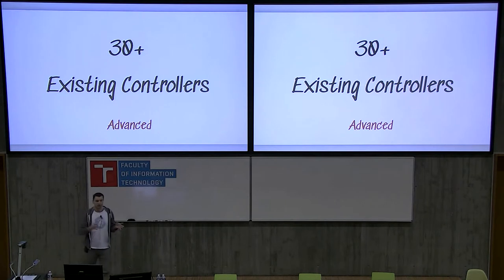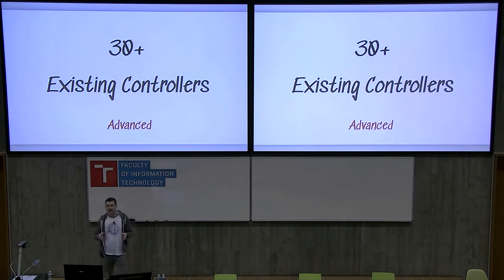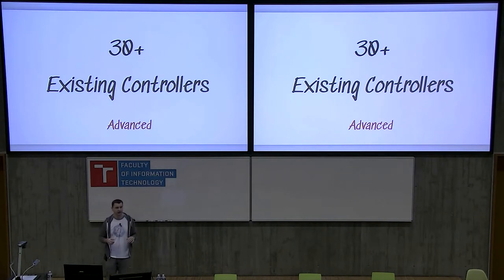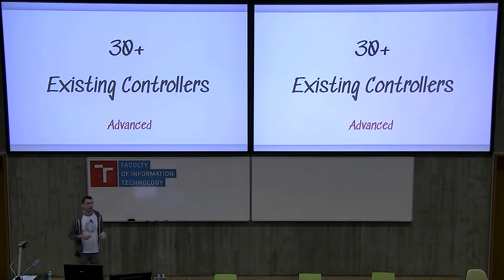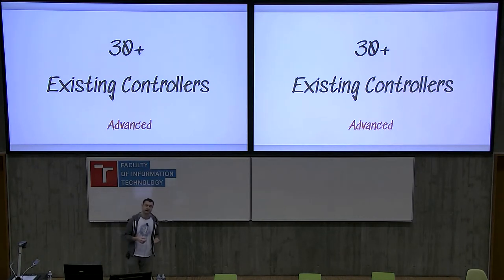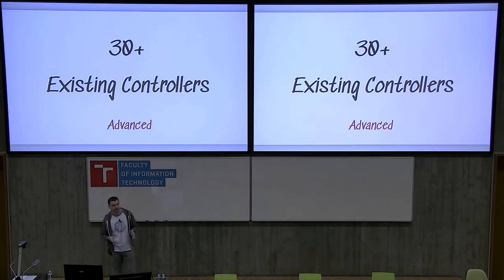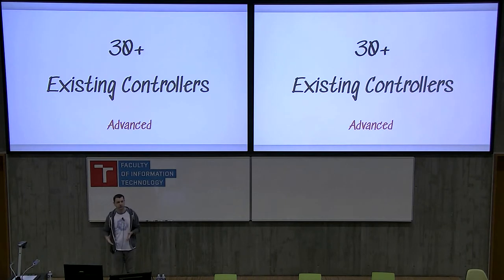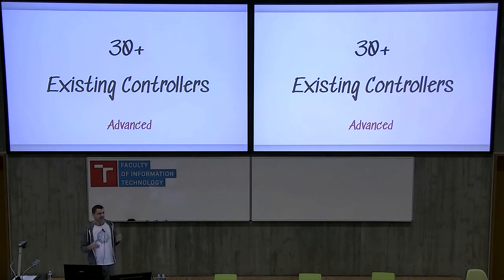OpenShift, aside from its core controllers and those dealing with builds or deployment configs, has a bunch of operators that will be covered in the next talk. Going back to my story — when I was writing the JobController, I opened ReplicationController, now called ReplicaSet, and used that as a reference. That is one option for writing your own controller, but it is an advanced option.